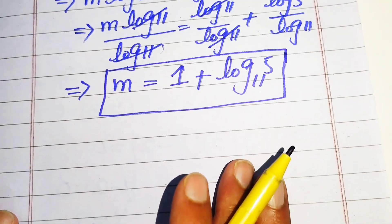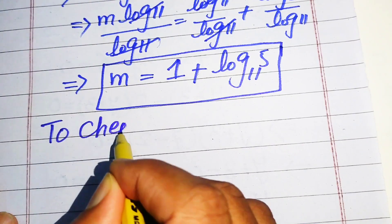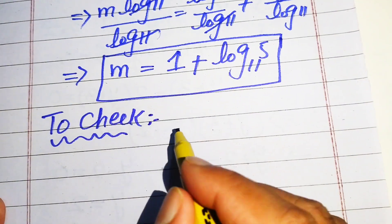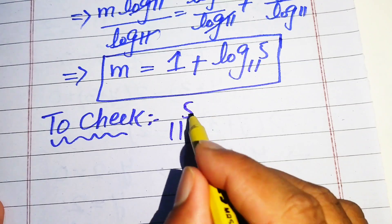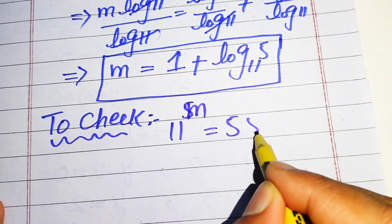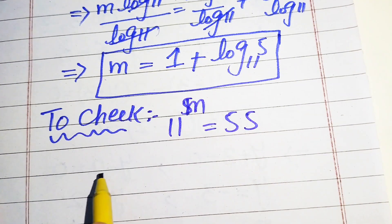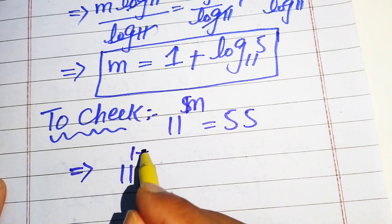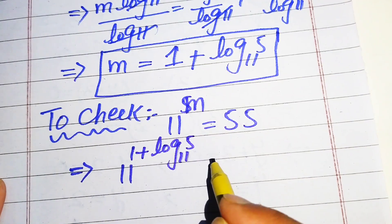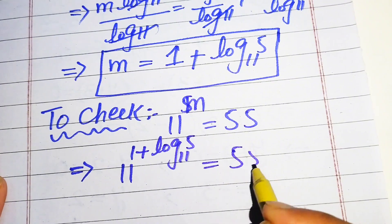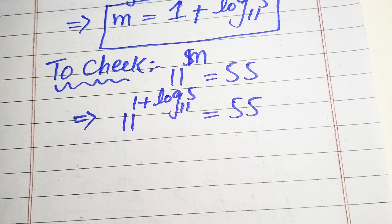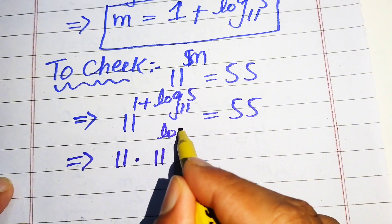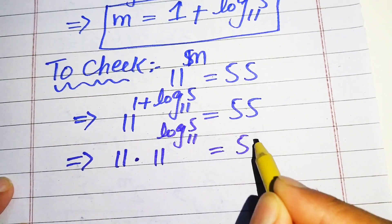Now we verify this value of m — to check whether it satisfies the given equation. We copy down the given equation: 11 to the power of m equals 55. Substituting our value of m, it is written as 11 to the power of 1 plus log base 11 of 5 equals 55. This simplifies to 11 times 11 to the power of log base 11 of 5 equals 55.